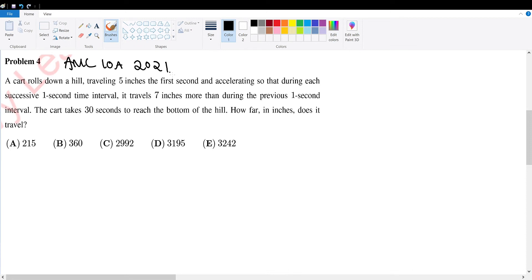AMC 10A 2021 problem 4. A cart rolls down a hill traveling 5 inches the first second, accelerating so that during each successive 1 second interval it travels 7 inches more than the previous second. The cart takes 3 seconds to reach the bottom of the hill. How far in inches does it travel?